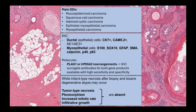With immunostains you can prove the dual cell population: myoepithelial cells stain for myoepithelial markers, and ductal cells stain for cytokeratin 7, CAM 5.2, or pancytokeratin. Other important differential diagnoses include adenoid cystic carcinoma, mucoepidermoid carcinoma, squamous cell carcinoma, and myoepithelial carcinoma — which is often confused with pleomorphic adenoma and underdiagnosed because of its bland cytology. In distinction from squamous cell carcinoma, note that while infarct-type necrosis after biopsy and bizarre degenerative atypia may occur in pleomorphic adenoma, tumor-type necrosis, significant pleomorphism, increased mitotic rate, and infiltrative growth are not features of pleomorphic adenoma and point toward high-grade carcinoma.